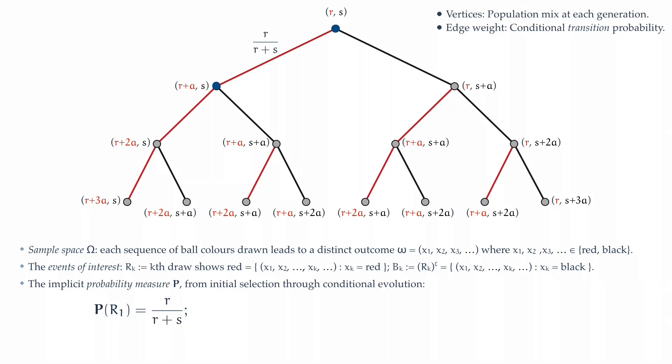Now given that we've got a red ball initially, the first red ball, what is the chance that we draw a second red ball? In other words, we move along the left edge of the tree again. We're now talking about a conditional probability. We're starting with the premise that we obtained a red ball initially, and therefore, with a population of R plus a red balls and s black balls, the chance of drawing a red ball is R plus a over the total population R plus s plus a.